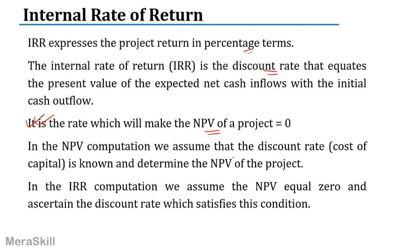In the NPV computation, we assume that the discount rate is known and determine the NPV of the project. We take a certain rate of discount — it's supposed to be the cost of capital, or the return from alternative investments, the opportunity cost. So in NPV we know the discount rate and then we find out NPV. But IRR is different — it's the other way around. We assume the NPV is 0 and then try to find out the discount rate that satisfies this condition.